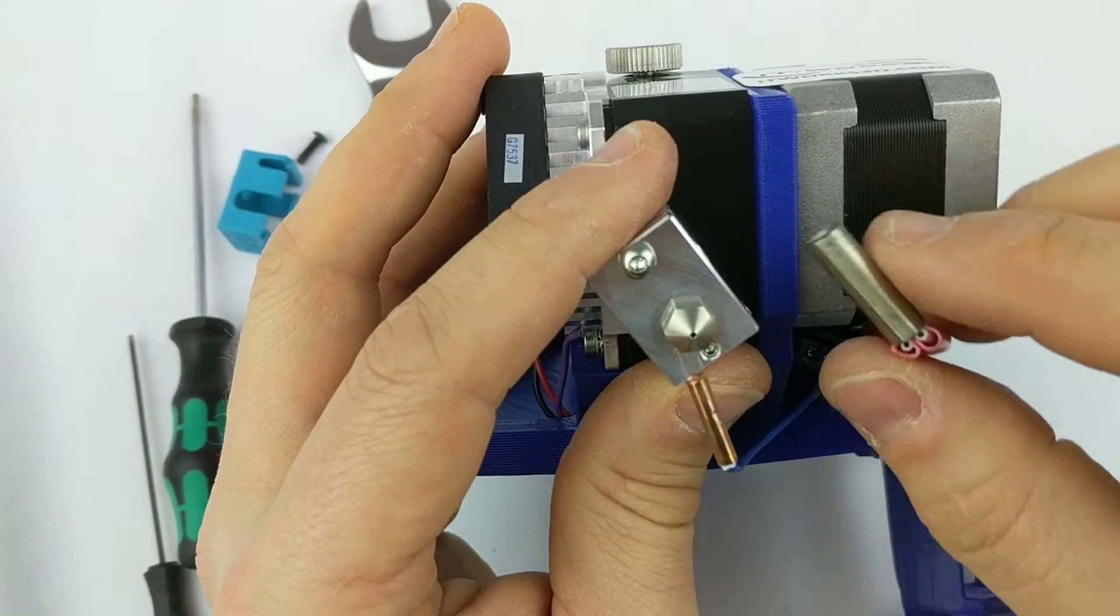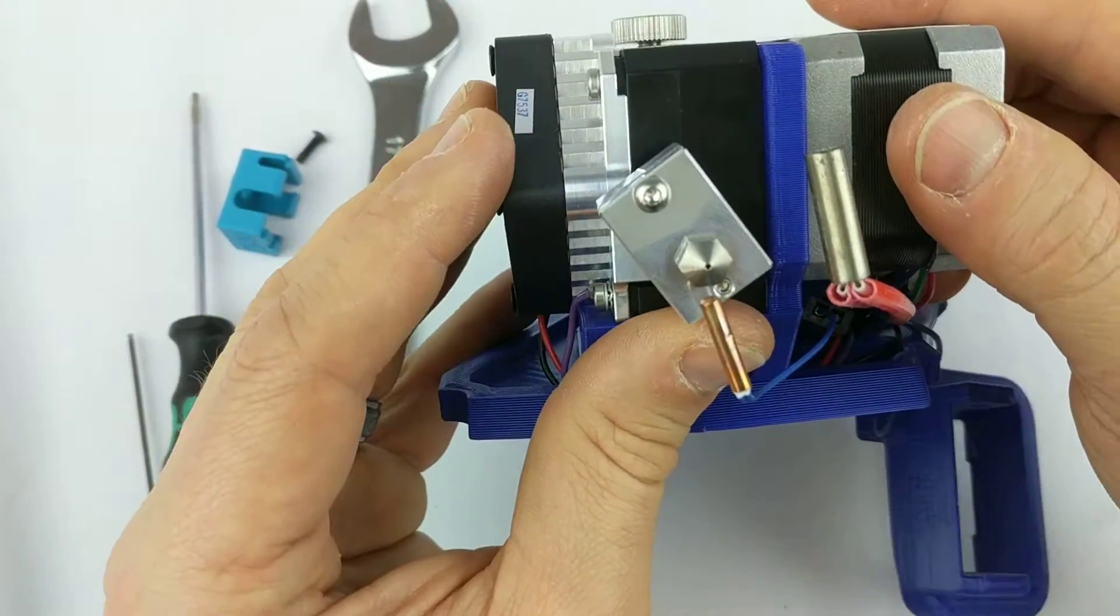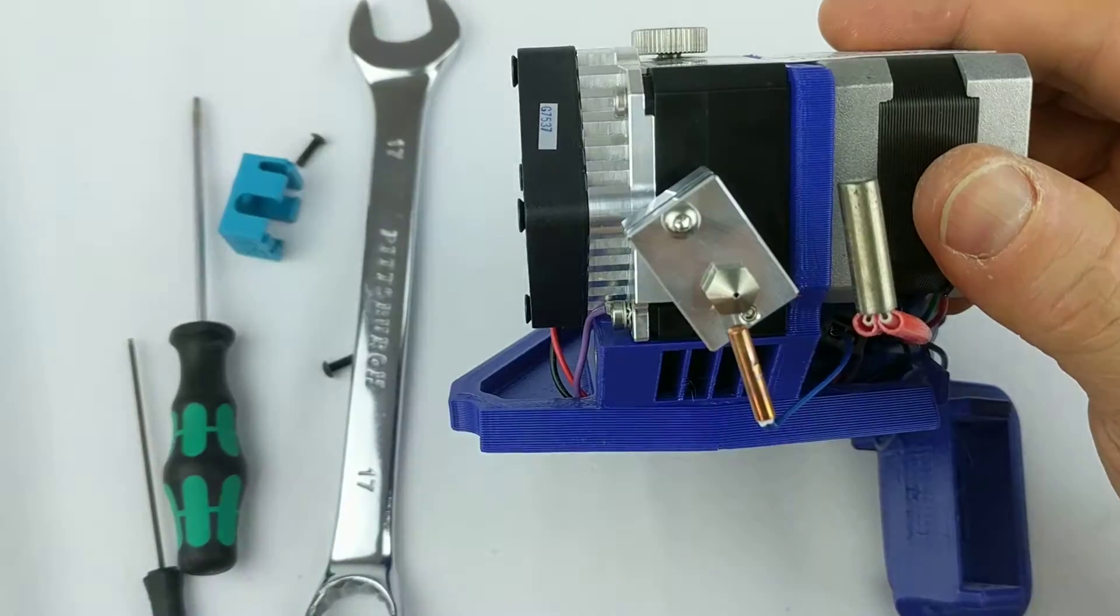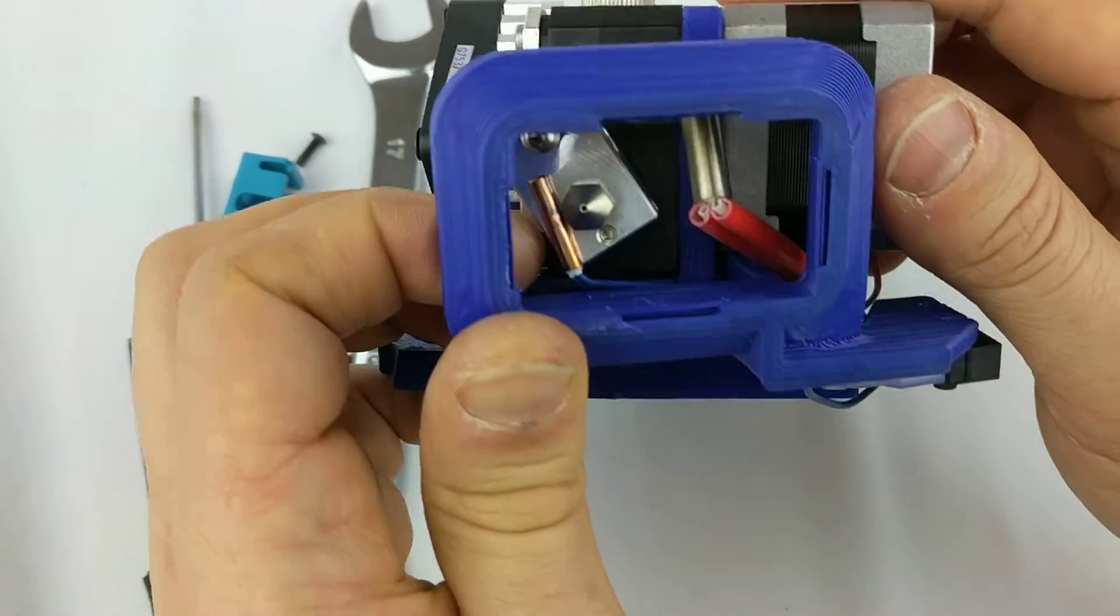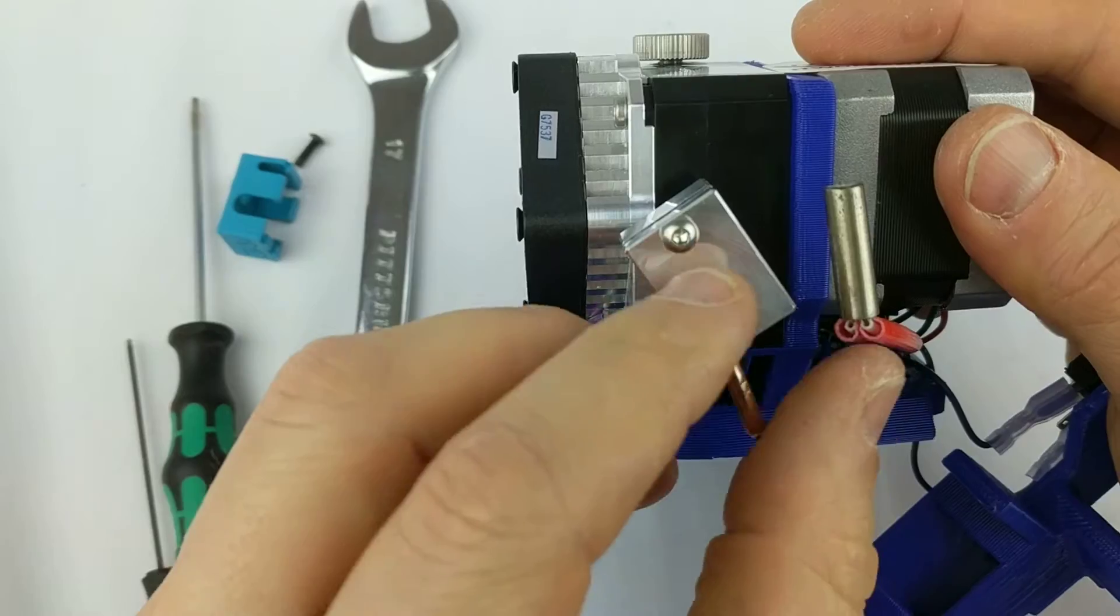At this point you could just reinsert your heater cartridge, your thermistor, and go. But on our Titan Arrow tool heads, because of the way the fan shroud is, we need to clock this.